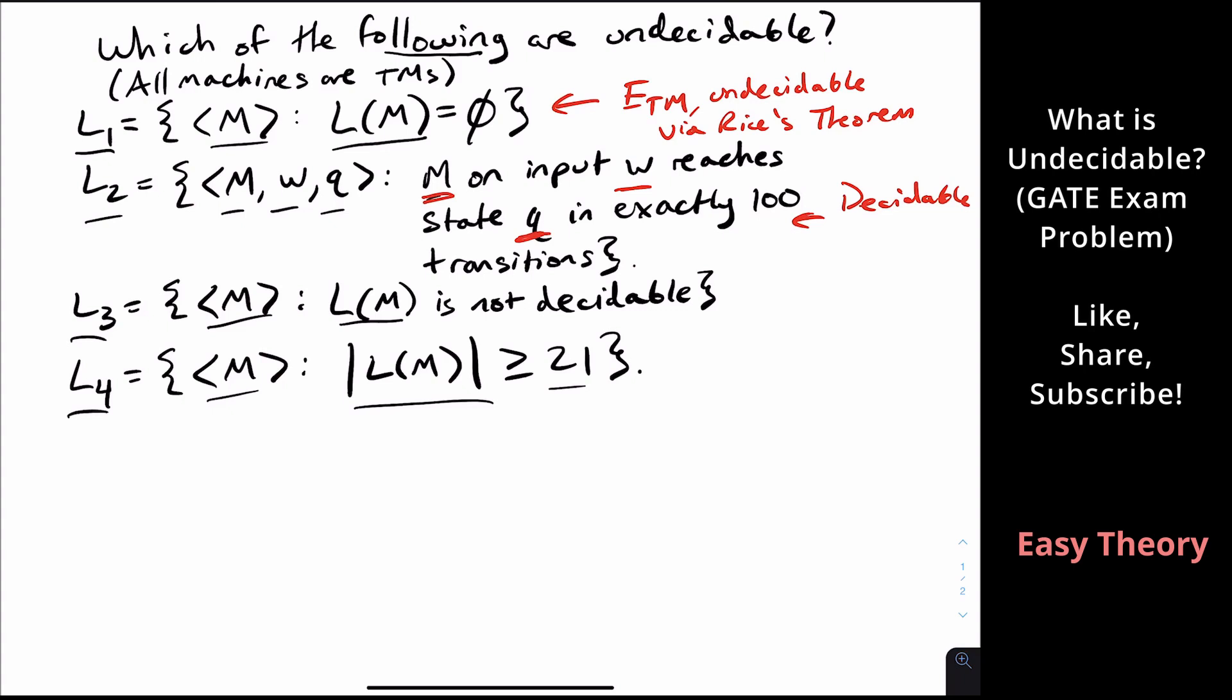Why is it decidable? Well, we could actually just simulate the machine for exactly 100 transitions. So the answer really here is simulate M on W for 100 transitions. And then just look at the state that we ended up in. And if it's equal to the state Q that we were given, then we should accept. Otherwise we should reject.